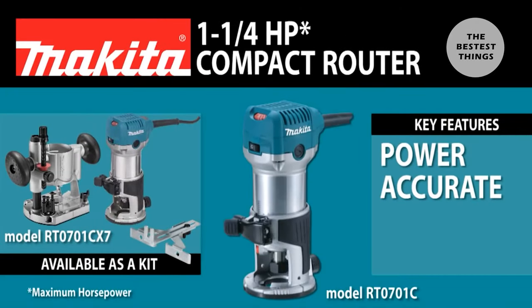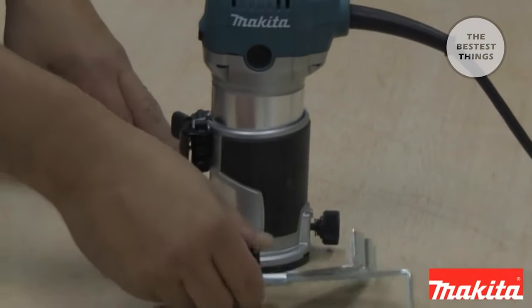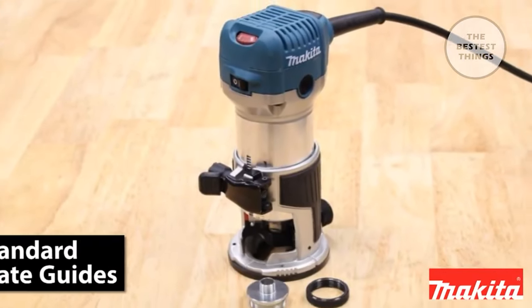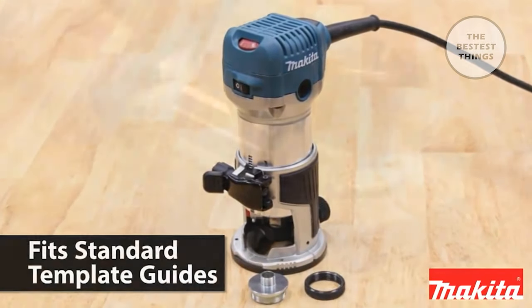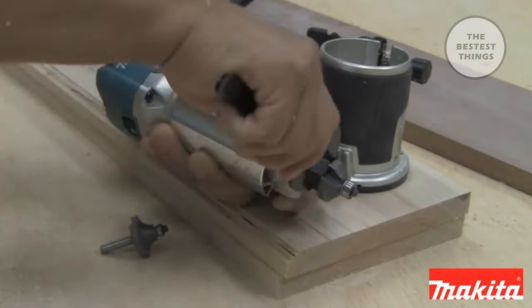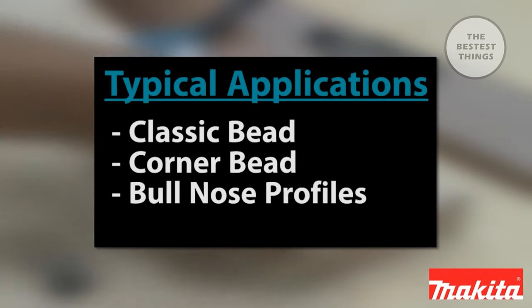The RT-0701C is a one and a quarter horsepower compact router. The router comes standard with a quarter inch collet and straight guide. And it takes industry standard template guides. The RT-0701C is used to create common profiles like classic bead, corner bead, bullnose profiles and more.